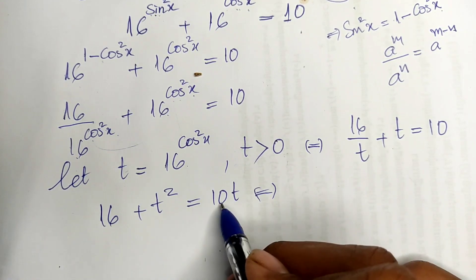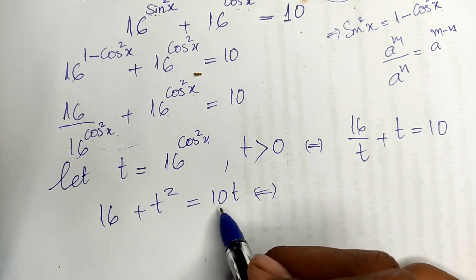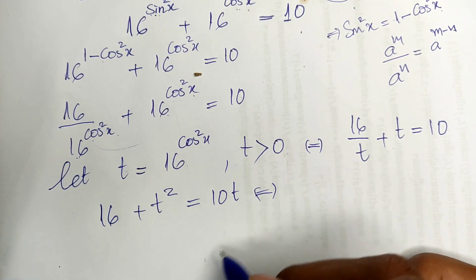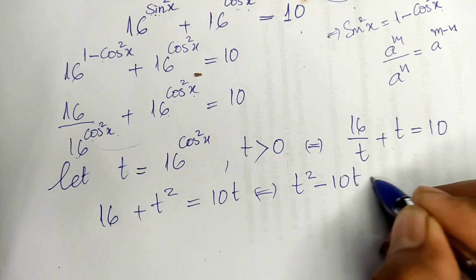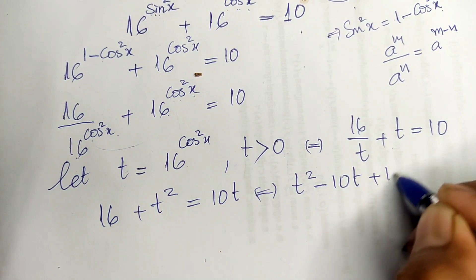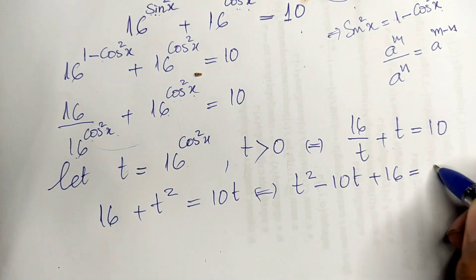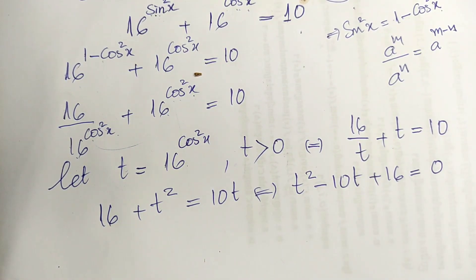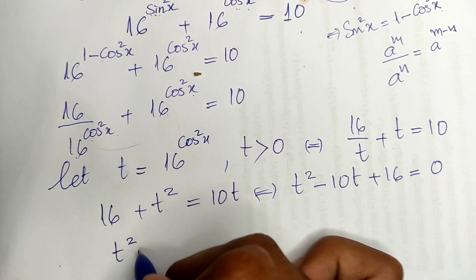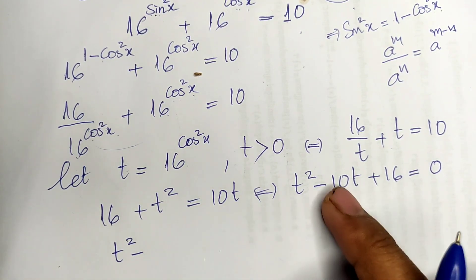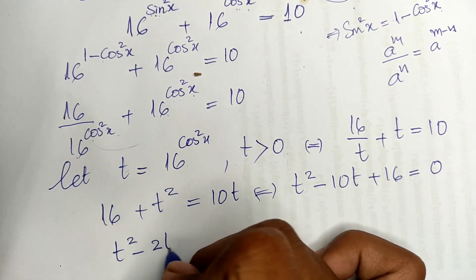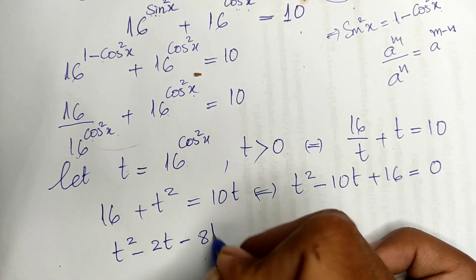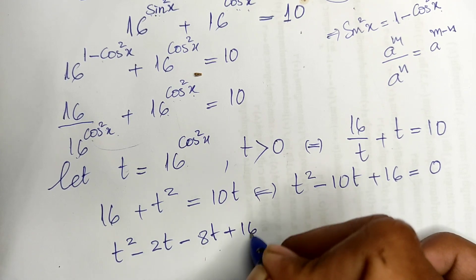Moving 10t from the right-hand side to the left-hand side, we get t squared minus 10t plus 16 equals 0. We can split the middle term as minus 2t minus 8t, giving t squared minus 2t minus 8t plus 16.